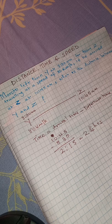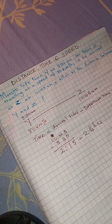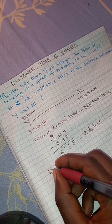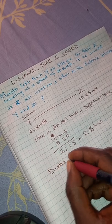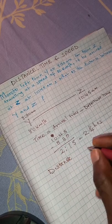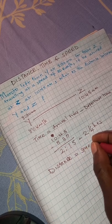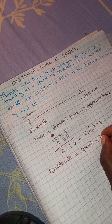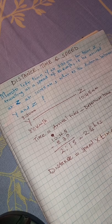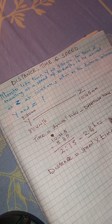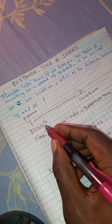That is the time he spent on the way. To get the distance, to calculate distance, the formula for calculating distance, we multiply speed times time. We have calculated time, 2 and a quarter hours. We have the speed, 80 kilometers per hour.